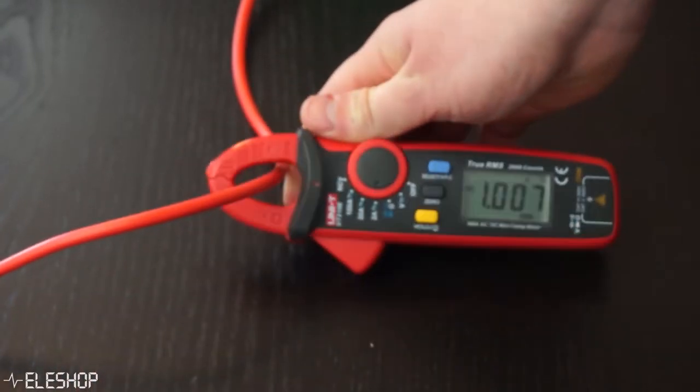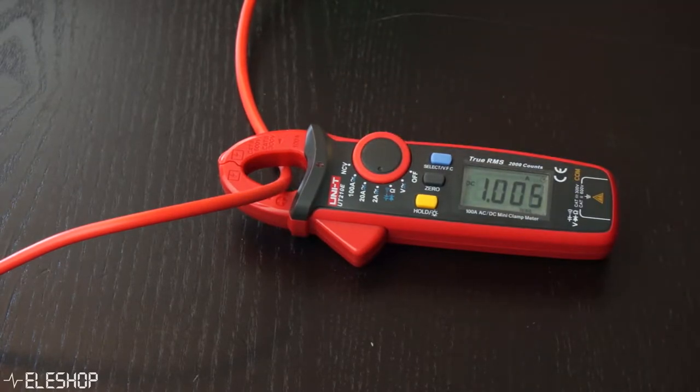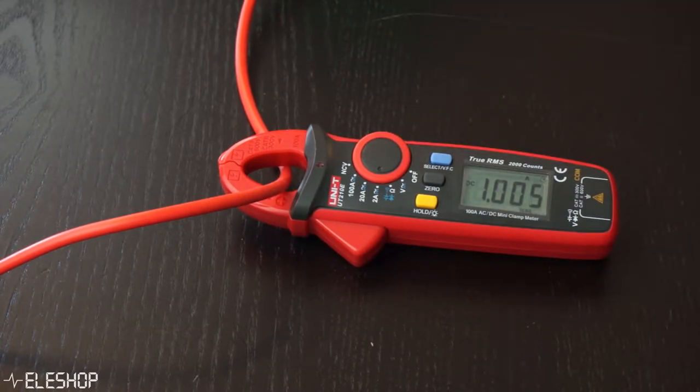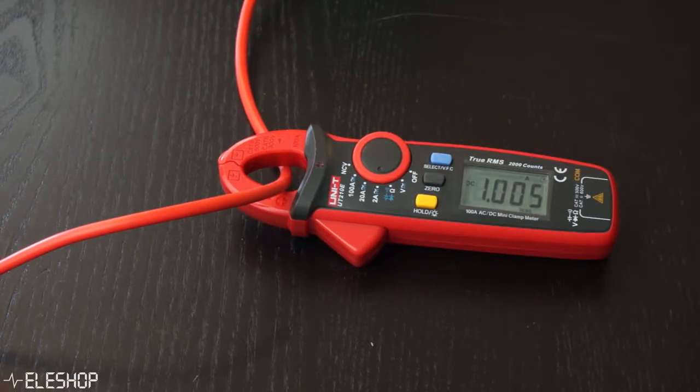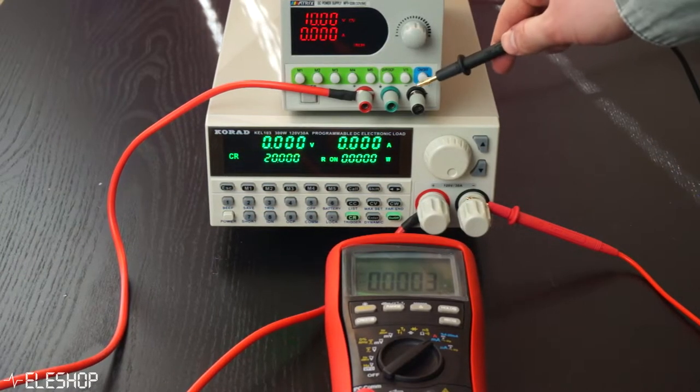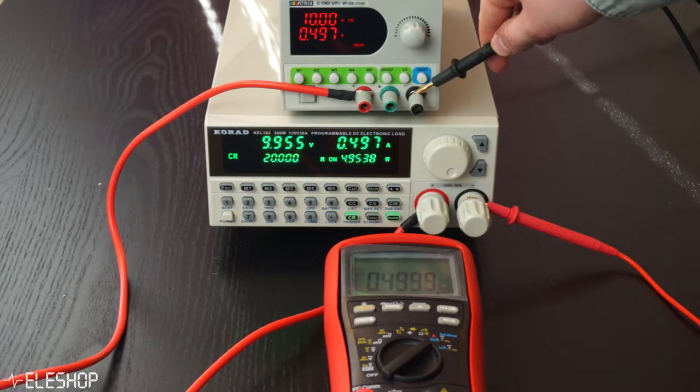They're often used for monitoring and quality control to ensure current is flowing and flowing at the correct magnitude. Current clamps are great for measuring the currents of cables you cannot disconnect.